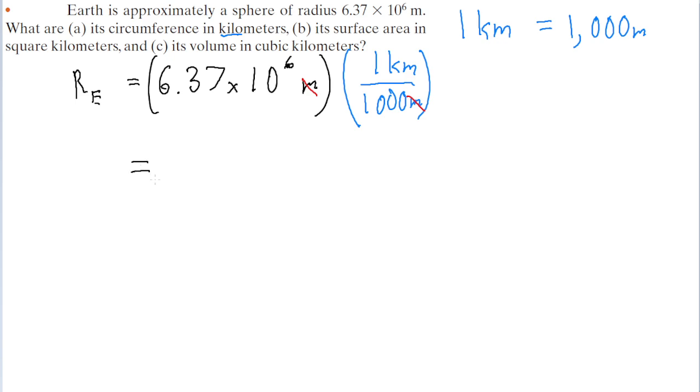If we put this into a calculator, this gives us a ratio of 6.37 times 10 to the power of 3 kilometers. Notice that because all we did was take our original value and divide it by a thousand, all that's really changed is that the exponent on this 10 has changed from a 6 to a 3. That exponent has basically just subtracted 3 from it, which makes sense because we divided it by a value that has three zeros.